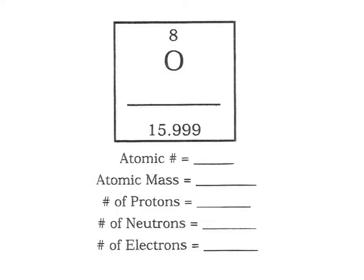So now we're ready to do some atomic math. We have the atomic number, the symbol, and the atomic mass. We're missing the name of the element, so let's write the name on the line. Remember, it needs to start with a capital O and spelling does count.